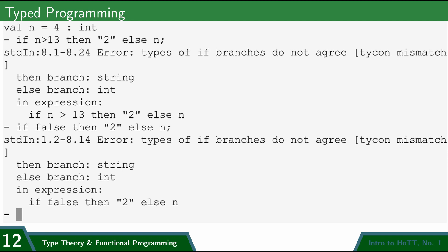So this is how a typed programming language behaves. It allows us to input expressions, and if those expressions are well typed, like 3 plus 3, or if n is greater than 13, then number 2 else n, then it will perform the calculation. But it knows how to spot an ill-typed expression, and refuses to compute them, even if, in principle, it could.